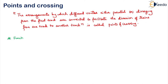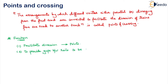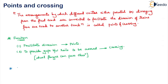What are the main functions? The first one is to facilitate diversions without any obstruction — that is the main function of points. When it comes to crossing, it is to provide gaps between rails to be crossed. We have to provide this gap for the rails to cross each other because the wheel flanges can pass through without any obstruction.